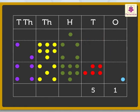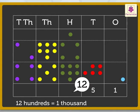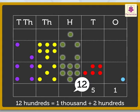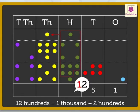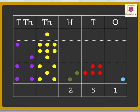Further, add the hundreds: one green dot plus four green dots plus seven green dots is equal to twelve hundreds. We know that twelve hundreds is equal to one thousand and two hundreds. Hence, we regroup twelve hundreds as one yellow dot and two green dots. Thus, we get two hundreds.